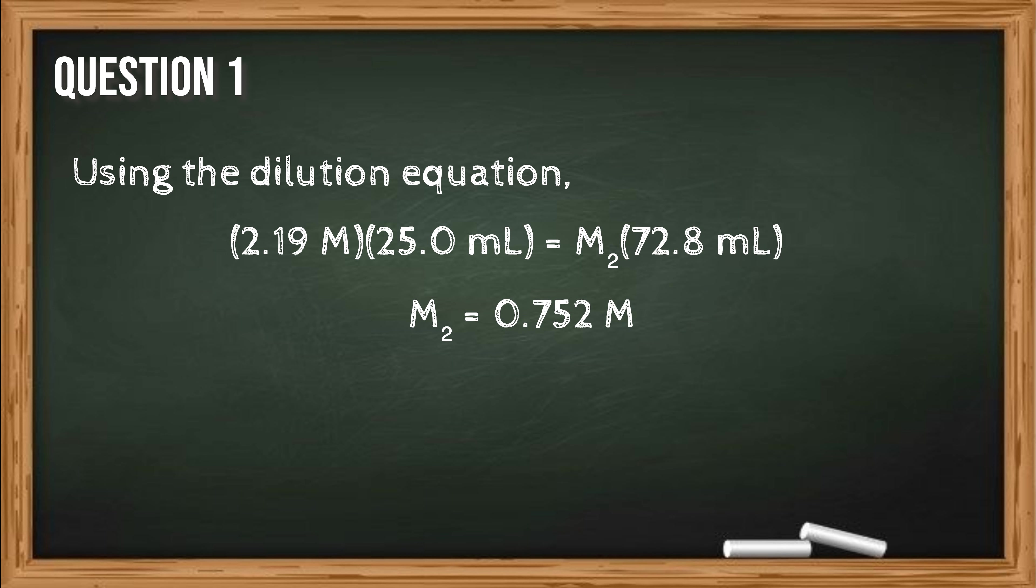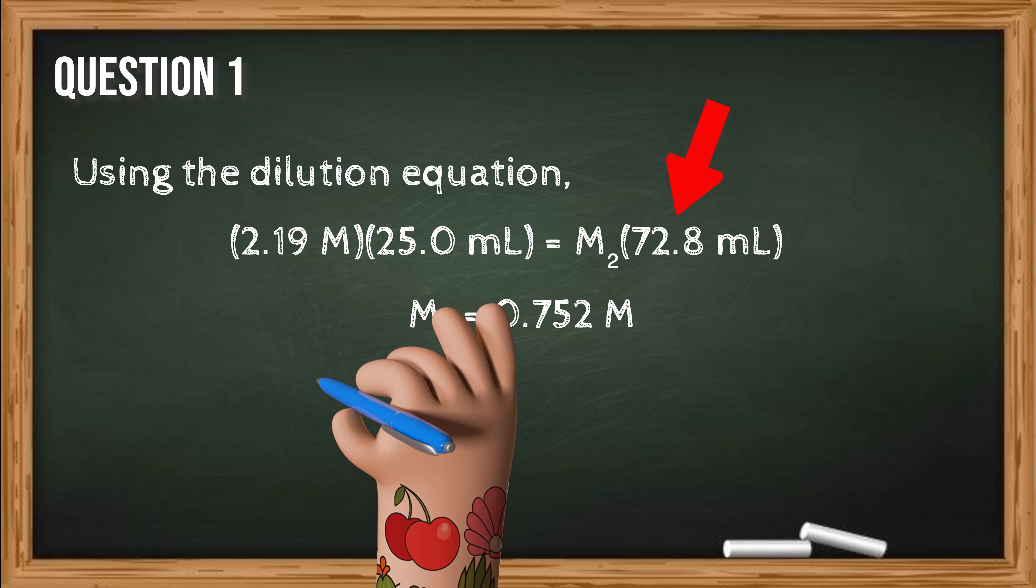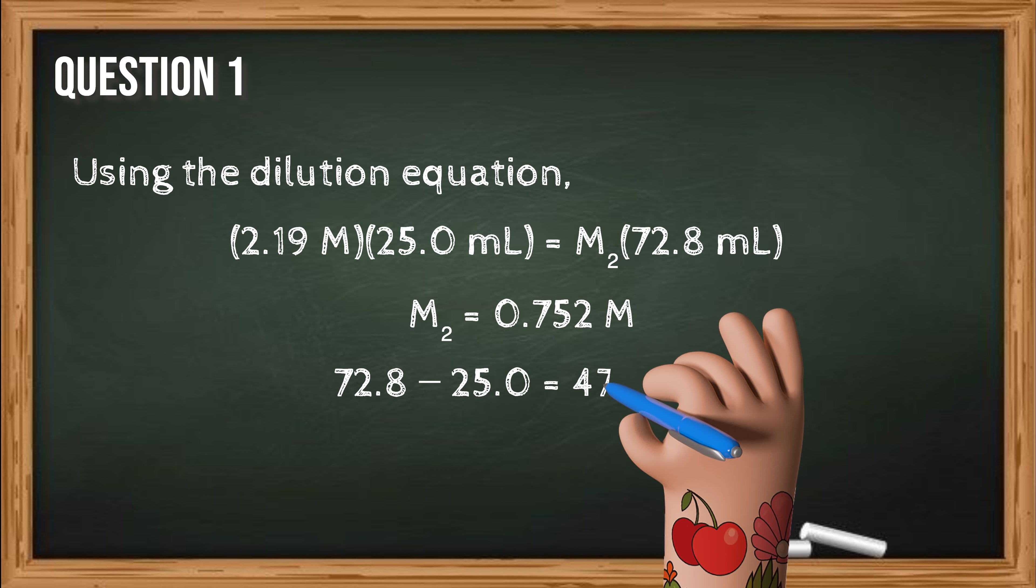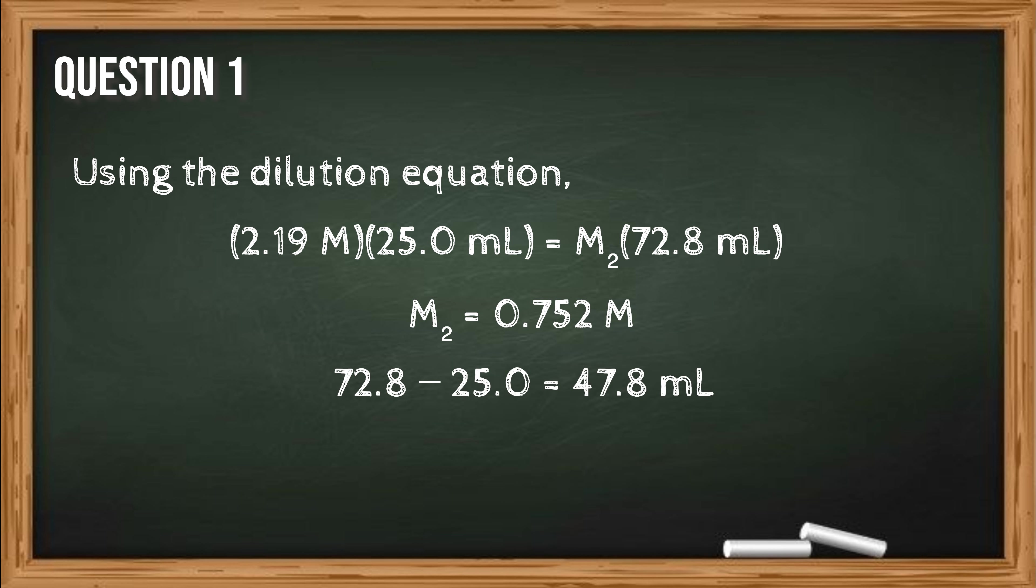Therefore, the concentration of the solution has decreased from 2.19 molar to 0.752 molar. To make 72.8 milliliters solution, 72.8 minus 25 is equal to 47.8 milliliters of solvent must be added to the stock solution.